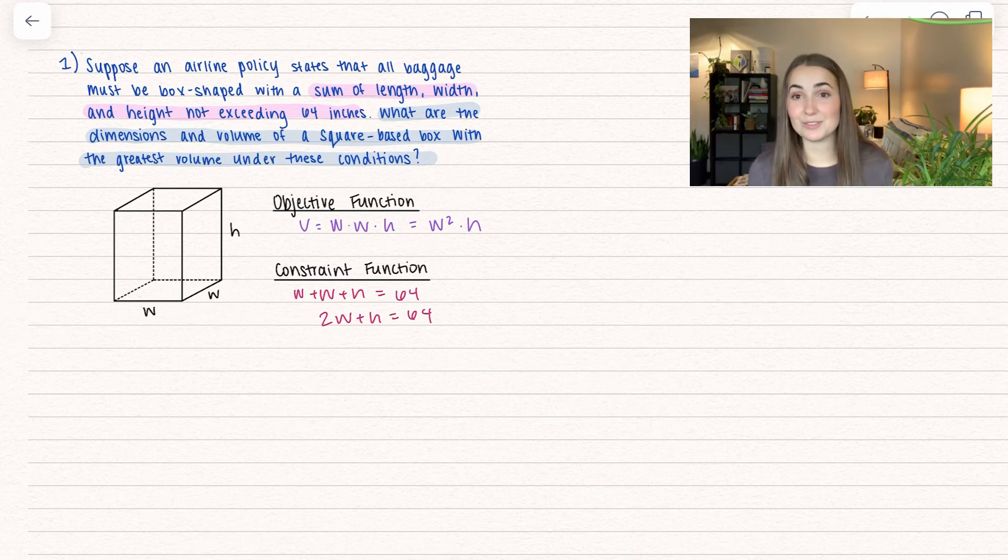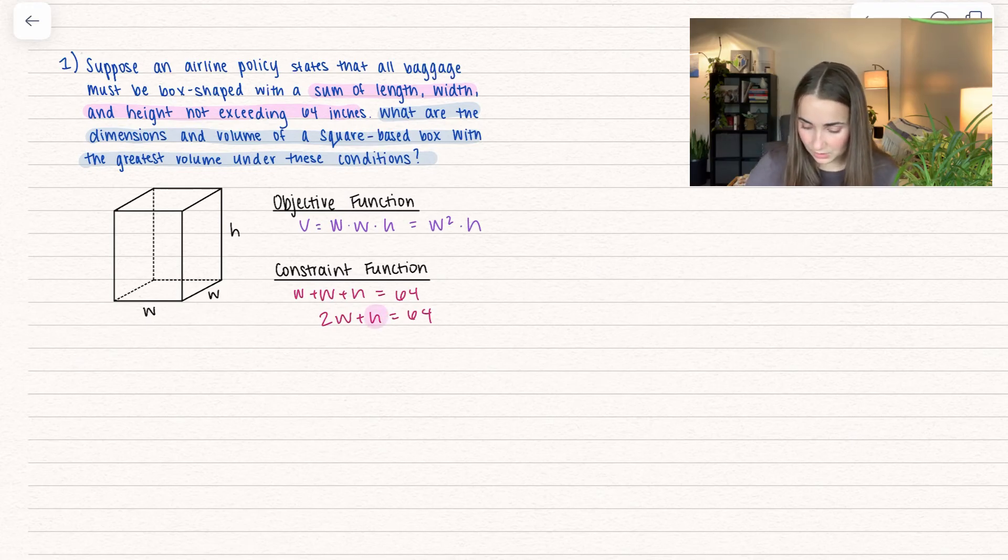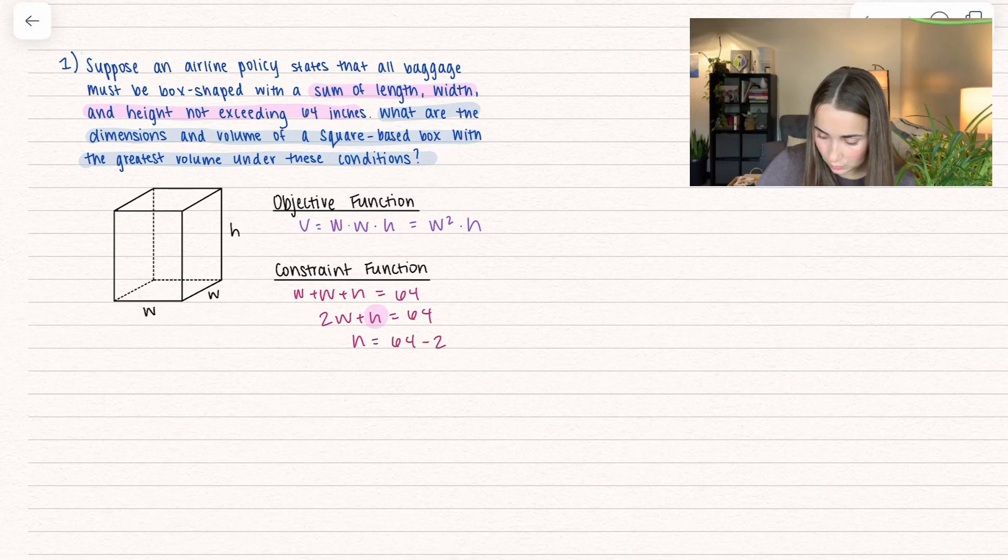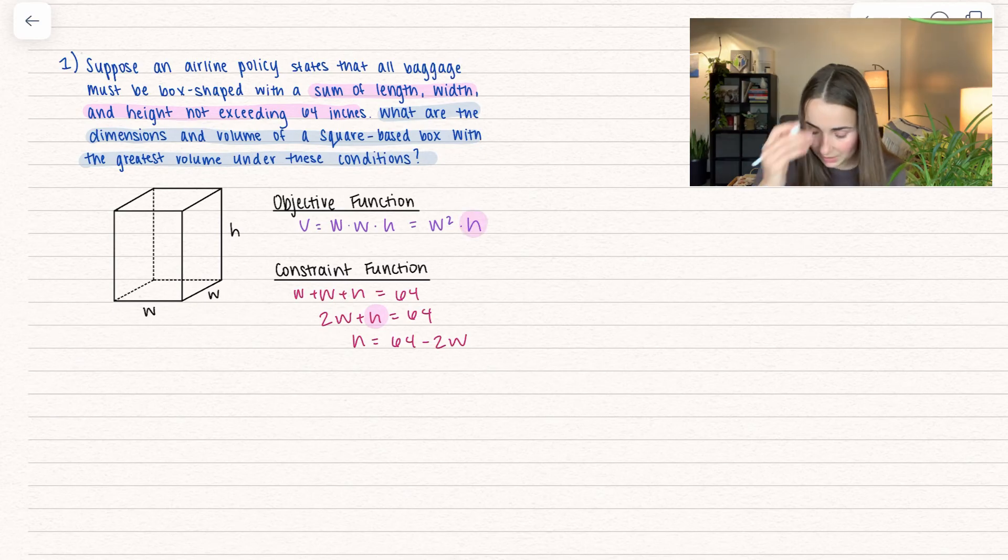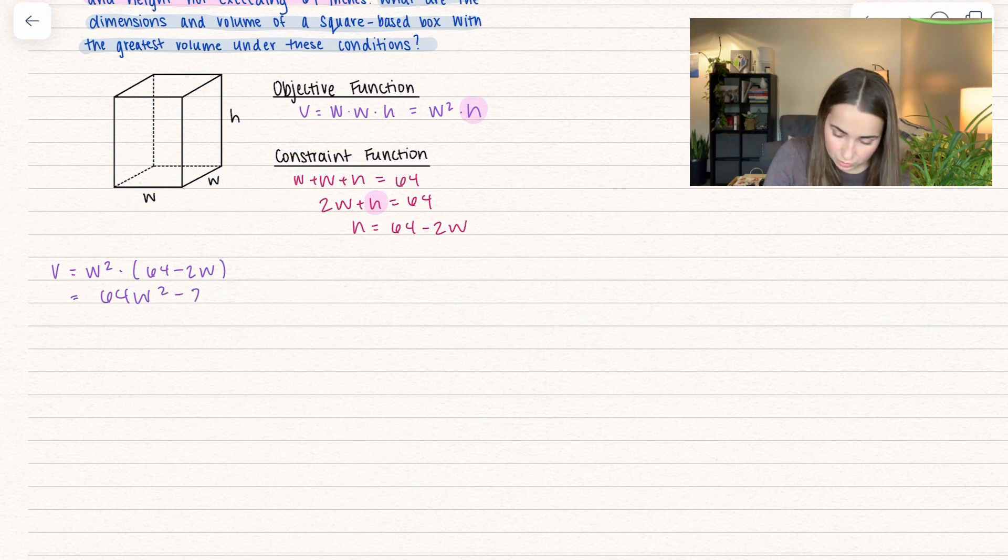I have two variables here. I do not want to take the derivative of two variables because then we get into implicit differentiation - no one likes that. So let's avoid it. I'll solve for H to get it by itself: H equals 64 minus 2W. Now I'll use this H value and plug it into the volume so everything is in terms of width. Let's simplify. I'll distribute W squared, so I get 64W squared minus 2W cubed.